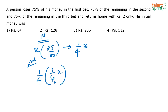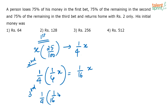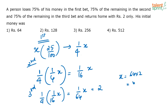And 75% of the remaining is lost in the third bet as well. He has only 1 by 16 of X, and out of this 1 by 16 X again 75% he is losing, so how much is remaining with him? Only one fourth of this — that is 1 by 64 X. Now this is given as 2 rupees, so X is equal to 64 into 2, that is equal to 128 rupees.